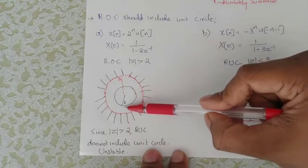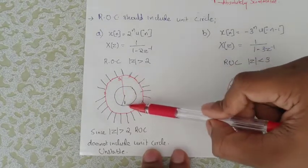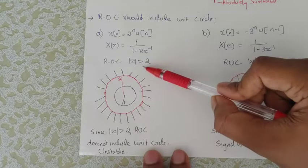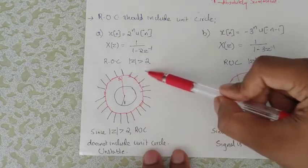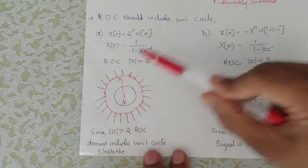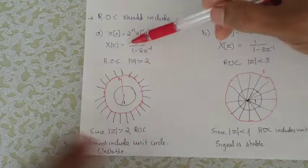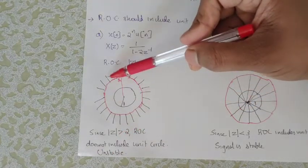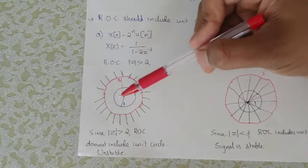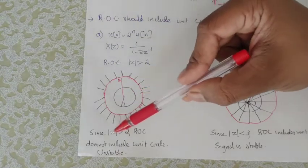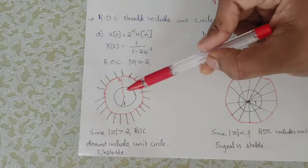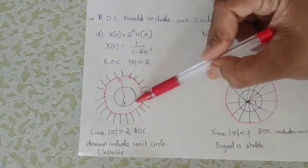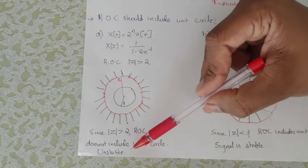We need to check whether the ROC includes the unit circle. The unit circle has radius equal to 1. Since the ROC is |z| greater than 2, and the unit circle is at radius 1, the ROC does not include the unit circle. Therefore, adding this signal gives an unstable result.